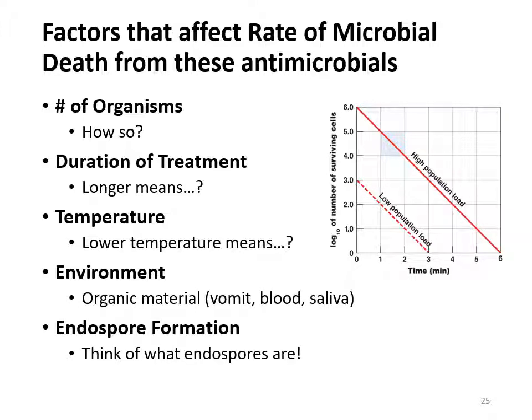The last category is endospore formation. Think about what an endospore is — those nice protective little escape pods that are very resistant. If they're very resistant, that makes your job a lot harder. Endospore formation will decrease the rate of microbial death and make it harder to kill the bacterial infection. For any of these factors, you have to ask yourself: will it make it easier or harder for me to kill the microbe?